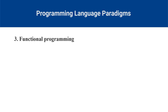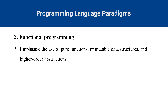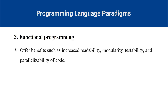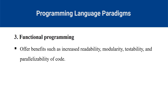Functional programming is a paradigm that emphasizes the use of pure functions, immutable data structures and higher-order abstractions. Unlike imperative or object-oriented languages, functional languages do not rely on mutable state or side effects to express computations. Instead, they use mathematical concepts such as lambda calculus, algebraic data types and monads to model complex behavior. Functional programming languages can offer benefits such as increased readability, modularity, testability and parallelizability of code. Some examples of functional programming languages are Haskell, Lisp, Clojure and Scala.